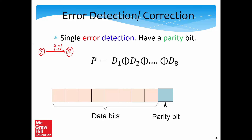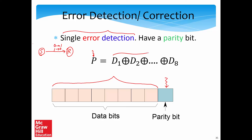Let us look at the simplest possible fault model, which is single error detection — detecting if there is an error where the maximum we can detect is a single bit flip. The way to do it is simple. If we consider an 8-bit frame, we can add an additional bit called the parity bit. The parity bit is the XOR — exclusive OR — of the 8 data bits D1 to D8. This parity bit is transmitted along with the message, so the frame is now 9 bits instead of 8.